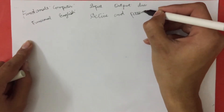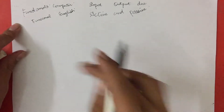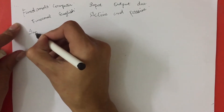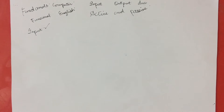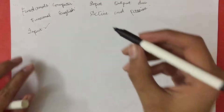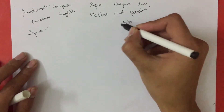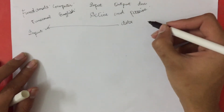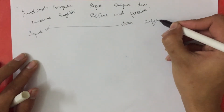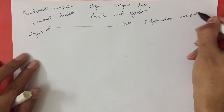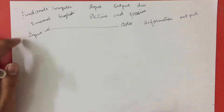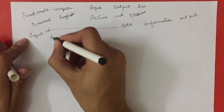First, let's discuss what is input. Input is any data which you enter into the memory of a computer, and then it processes it into information, which we call output. So data is input and any useful information will be your output.